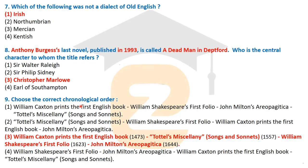Question nine: choose the correct chronological sequence. The correct answer is: William Caxton's printing press — the first English book published in 1473; Tottel's Miscellany: Songs and Sonnets published in 1557; William Shakespeare's First Folio published in 1623 by his friends; and John Milton's Areopagitica published in 1644, a work related to freedom of the press.